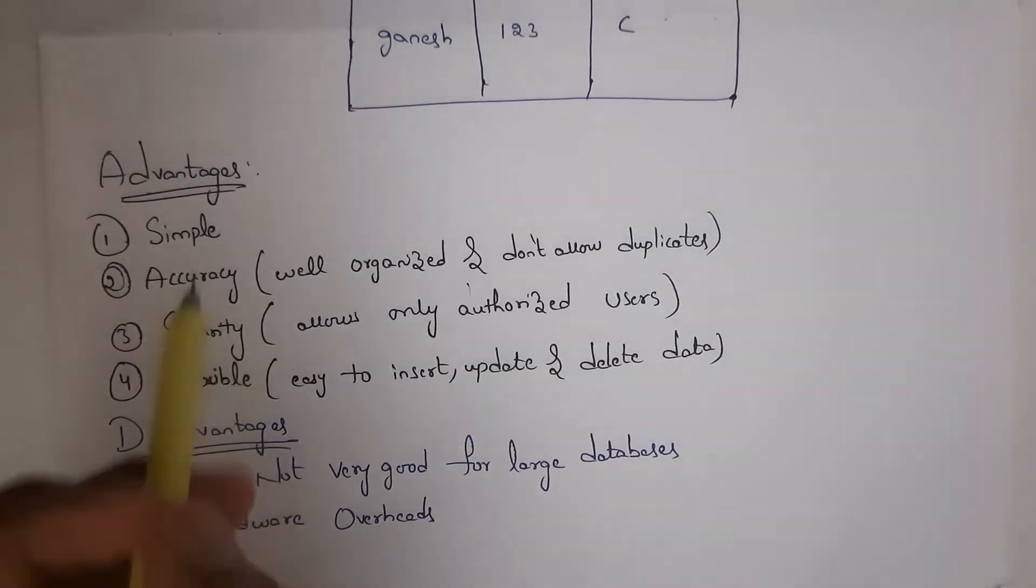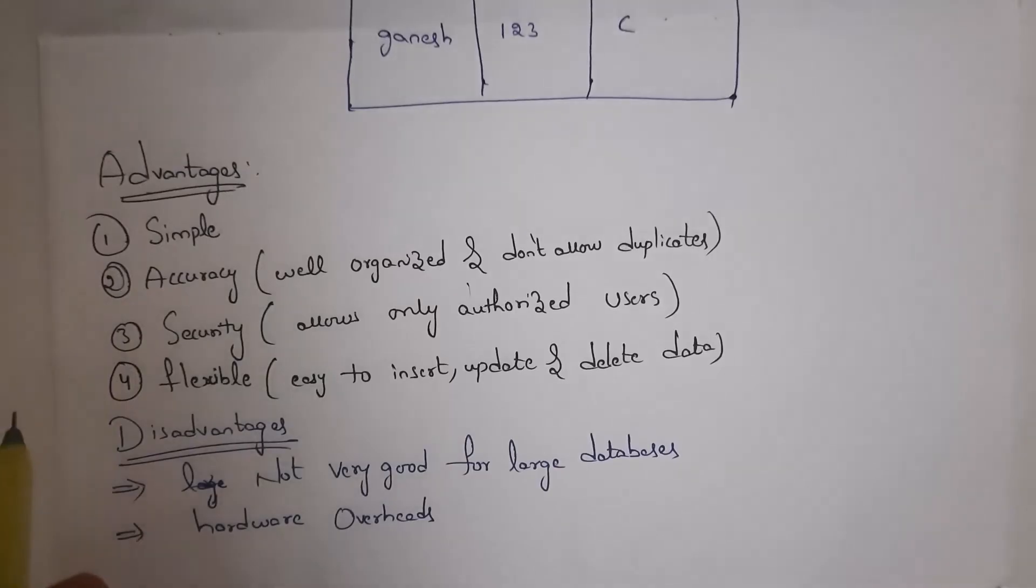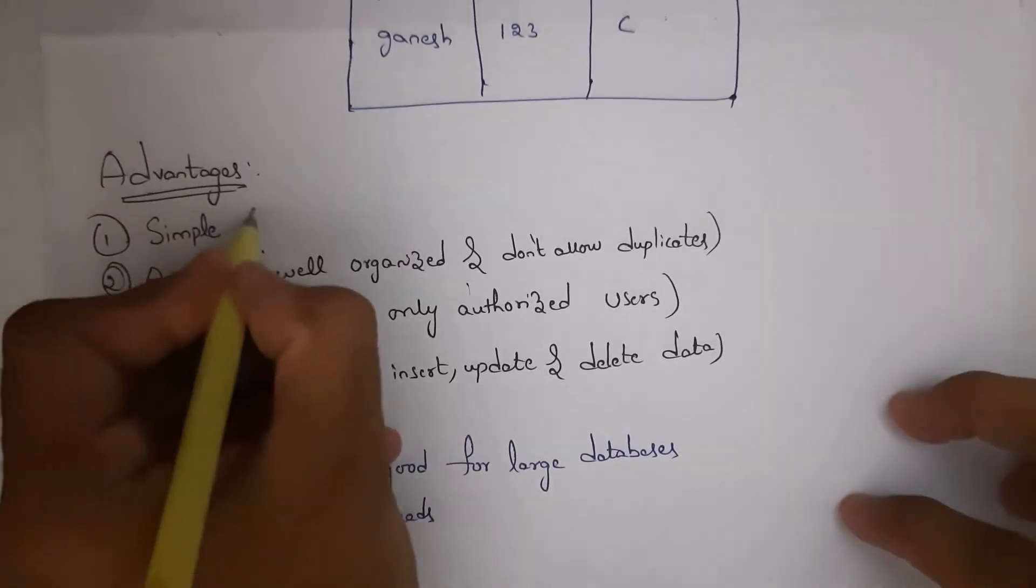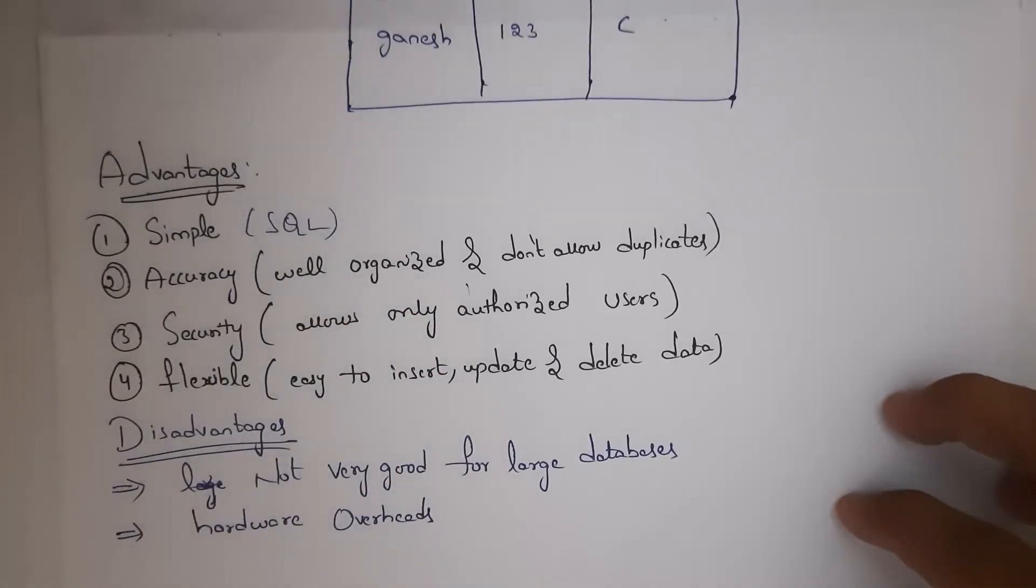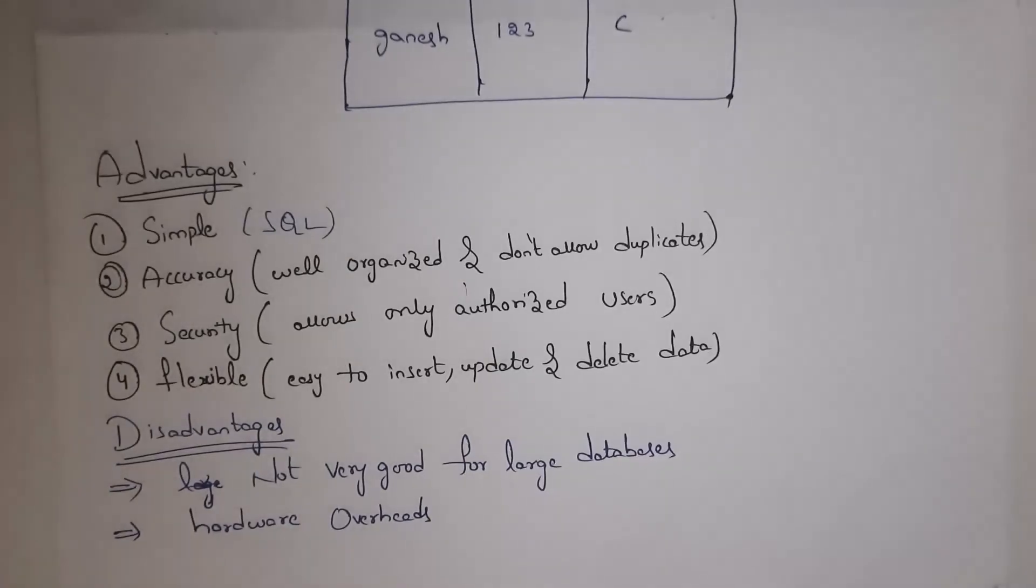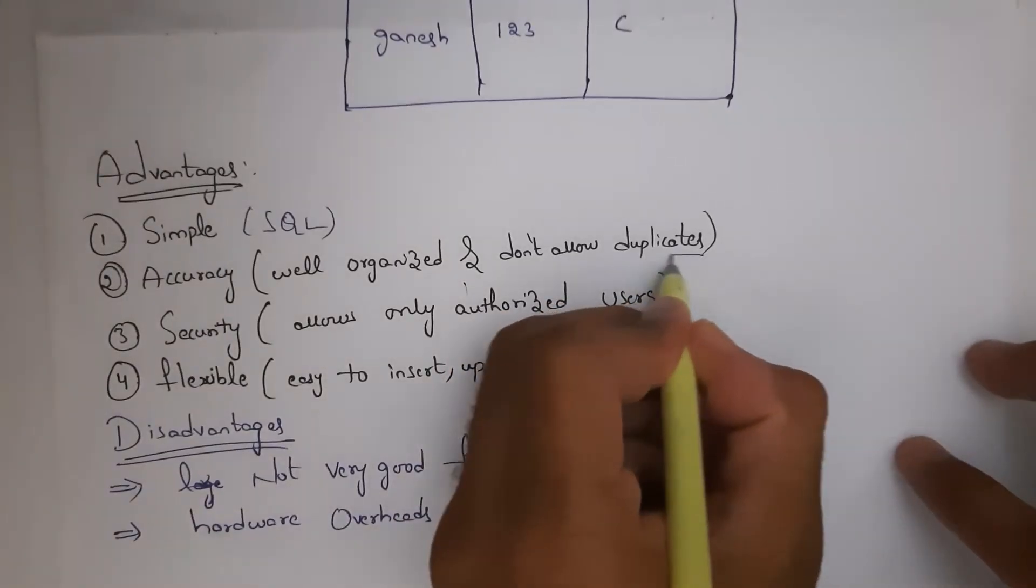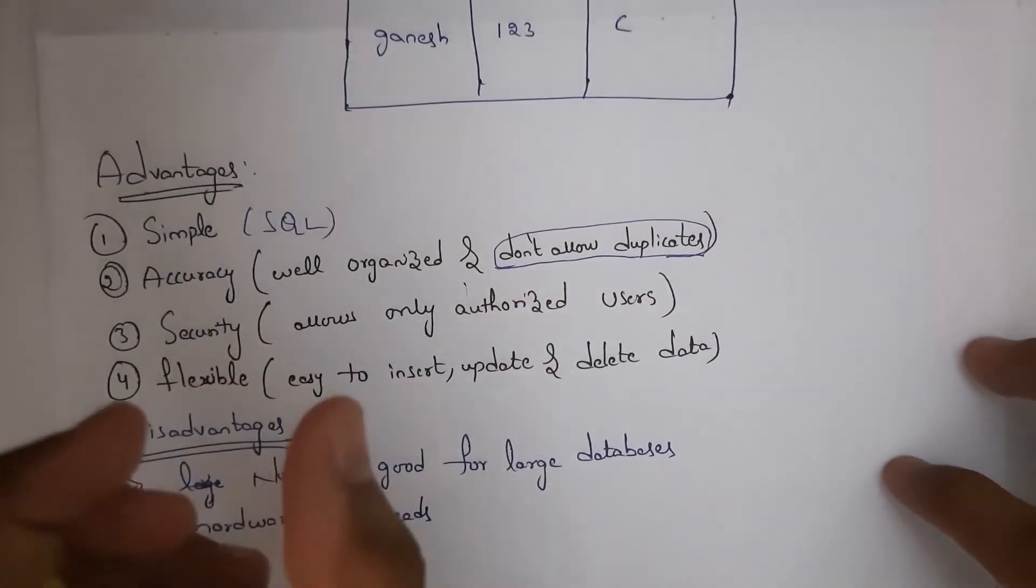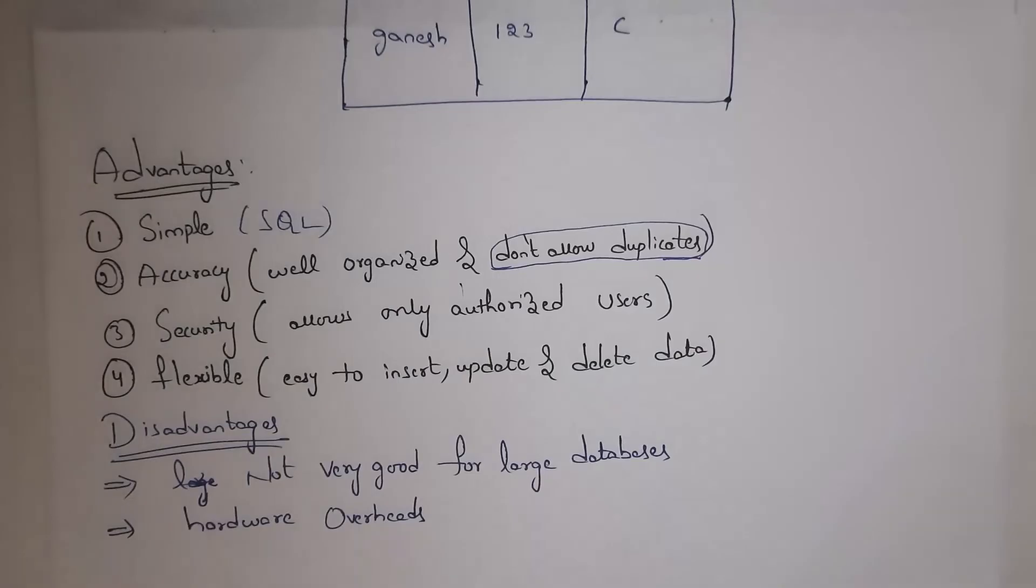First one is simple. When compared to all models, relational model is very simple because if you know SQL, that is Structured Query Language, you can easily use this relational model. Next one is accuracy. Whatever data is present inside relational model will be correct because relational model will not allow duplicate values and all data is in well organized format.